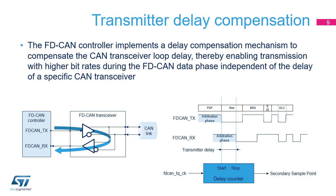The transmitter delay compensation enables configurations where the data bit time is shorter than the transmitter delay. It is activated by setting the TDC bit in the DBTB register. The received bit is compared against the transmitted bit at the secondary sample point (SSP). The SSP position is defined as the sum of the measured delay from the FDCAN transmit output pin FDCAN-TX through the transceiver to the receive input pin FDCAN-RX, plus the transmitter delay compensation offset. The transmitter delay compensation offset is used to adjust the position of the SSP inside the received bit, e.g. half of the bit time in the data phase.